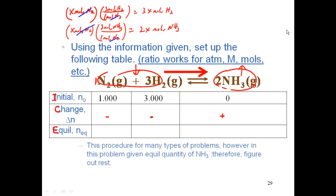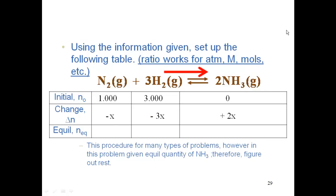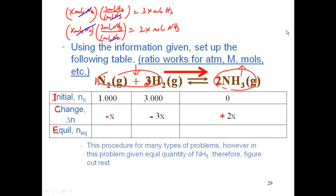So my change then in this case is going to be -x for nitrogen, I will have to need -3x of hydrogen, and I will produce +2x of ammonia.